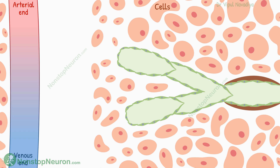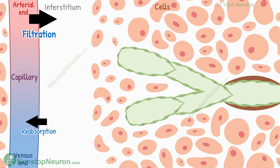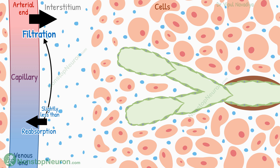In tissues, we have cells, interstitium, and capillaries. In the video on filtration across the capillary, we have seen that the sum of all the Starling forces at the arteriolar end causes net fluid filtration. And at the venous end, there is net absorption. However, this absorption at the venous end is slightly less than the filtration, so some fluid is left behind in the interstitium.